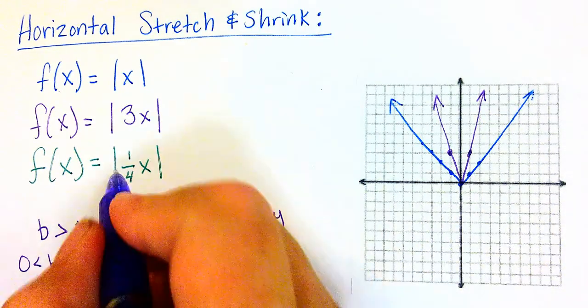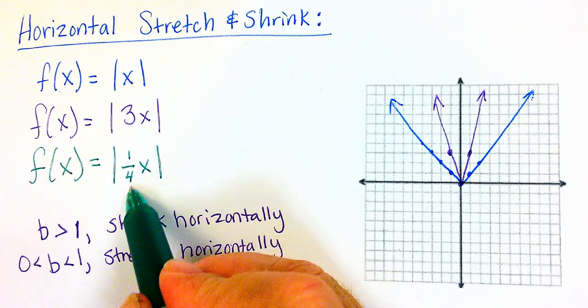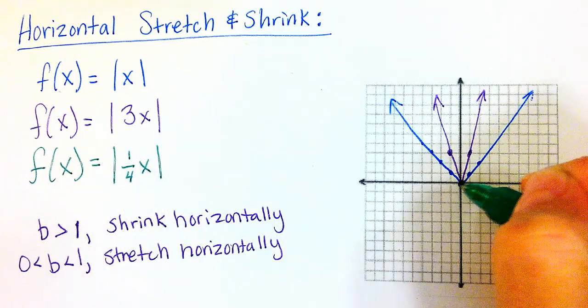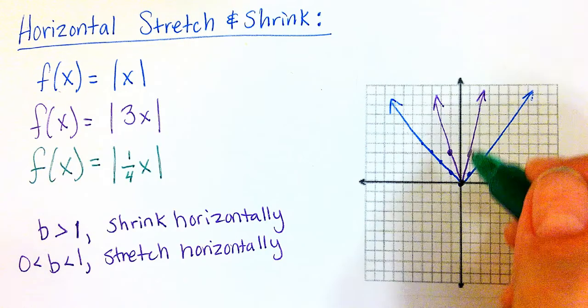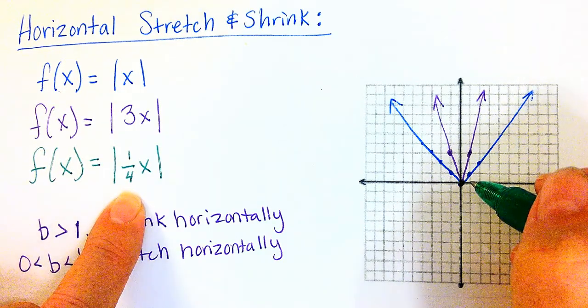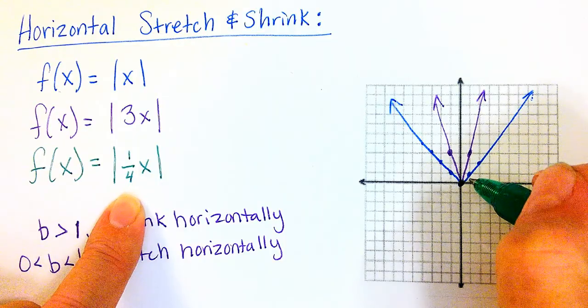Let's take the same thing with the absolute value of 1 fourth x. So I still have 0, 0. And then I have 1. 1 times 1 fourth is 1 fourth. Absolute value of 1 fourth is also 1 fourth. So I've got 1 fourth here.